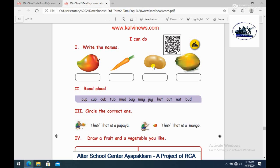First exercise is write the names. Here are pictures and identify the name. First picture is Mango. If you know what mango spelling, you can write it. Next picture, Carrot. Potato. Papaya. Okay.